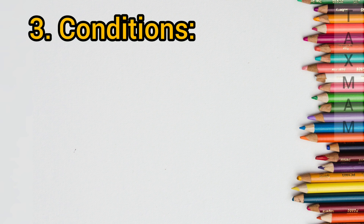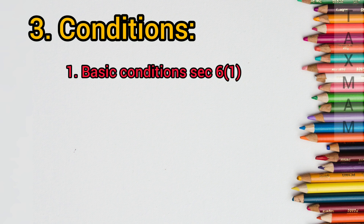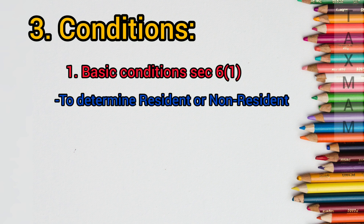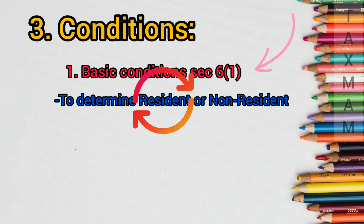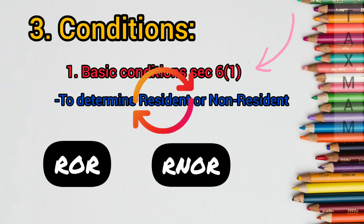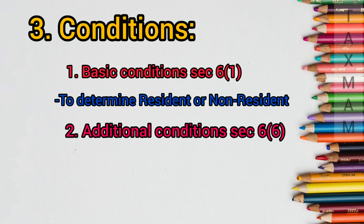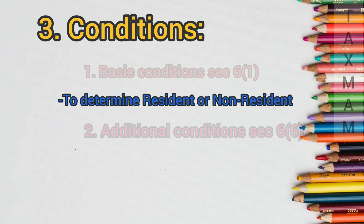Two conditions are described under Section 6 of the Income Tax Act. The first one talks about the basic conditions described under Section 6, subsection 1. These basic conditions will determine whether the person is a resident or non-resident. If the person is declared as a resident after going through this condition, then we must further determine whether the person is ROR or RNOR, for which we have additional conditions.